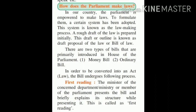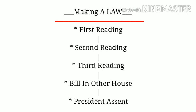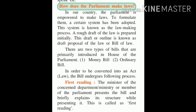In order for a bill to become an act or law, it must undergo the following process: first reading, second reading, third reading, bill in the other house, and the President's assent. In the first reading, the minister of the concerned department or a Member of Parliament presents the bill and briefly explains its nature — this is called the first reading.